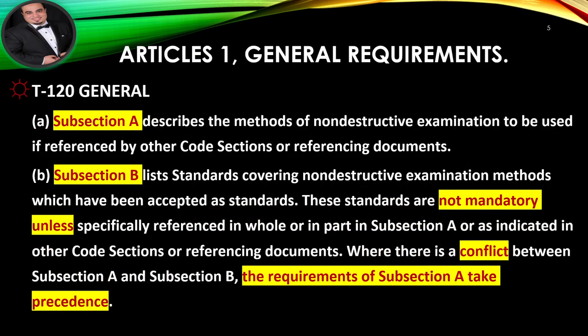Item T-120 General: Subsection A describes the methods of non-destructive examination to be used if referenced by other code sections or referencing documents. Subsection B lists standards covering non-destructive examination methods which have been accepted as standards. These standards are not mandatory unless specifically referenced in whole or in part in Subsection A, or as indicated in other code sections or referencing documents. Where there is a conflict between Subsection A and Subsection B, the requirements of Subsection A take precedence.